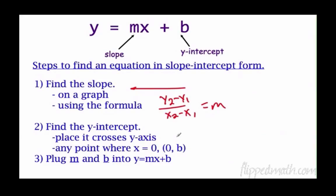We can find this because it's the place where it crosses the y-axis or it is any point where x equals 0. For instance, 0 equals 27, the y-intercept would be 27. Once we find m and b, all we need to do is just plug those into the equation.